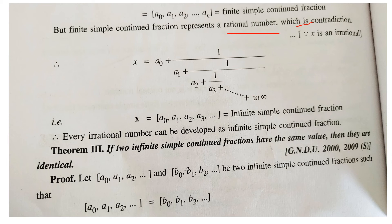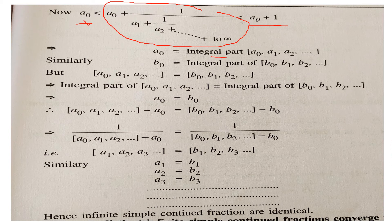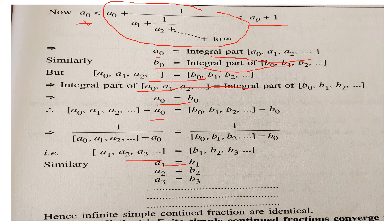Theorem 3: If two infinite simple continued fractions have the same value, they are identical. Take two infinite continued fractions both equal to each other. Any continued fraction lies between a₀ and a₀ + 1, so its integral part is a₀. Since both fractions are equal, their integral parts must be equal: a₀ = b₀. Removing a₀ and b₀ and taking reciprocals, we get a₁ = b₁, then a₂ = b₂, and so on — so the fractions are identical.